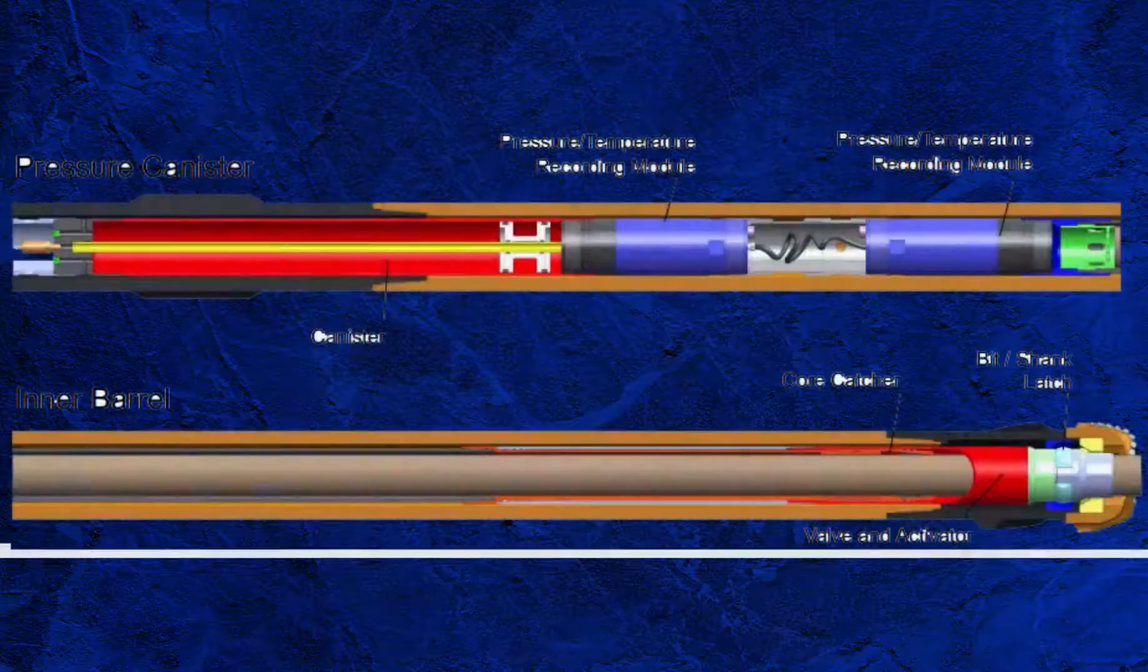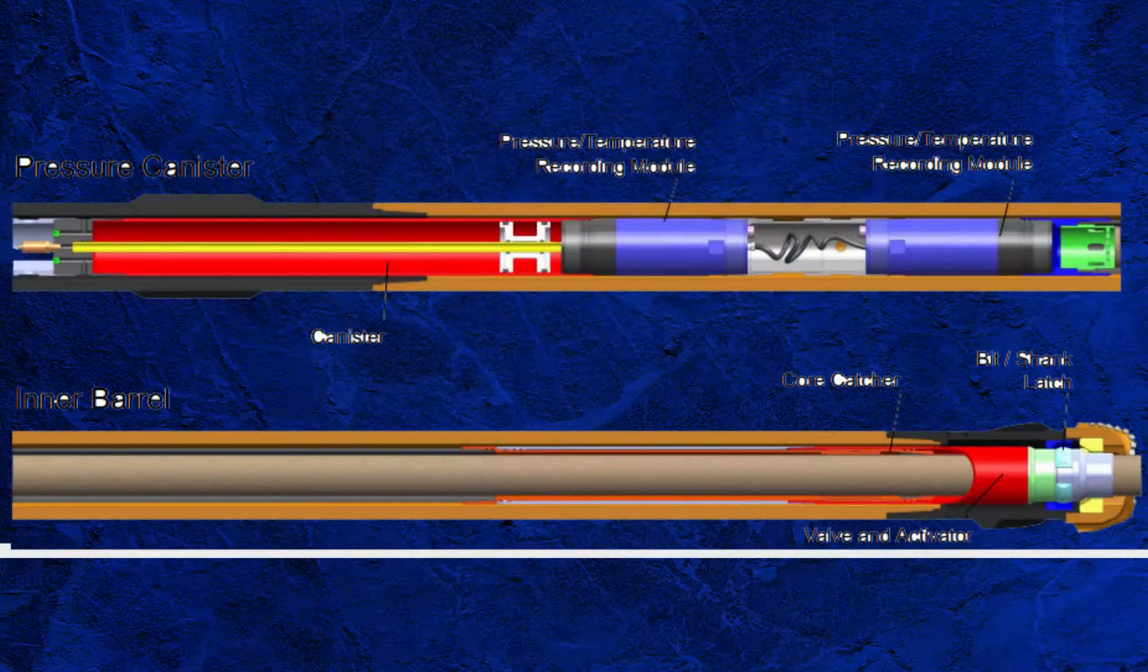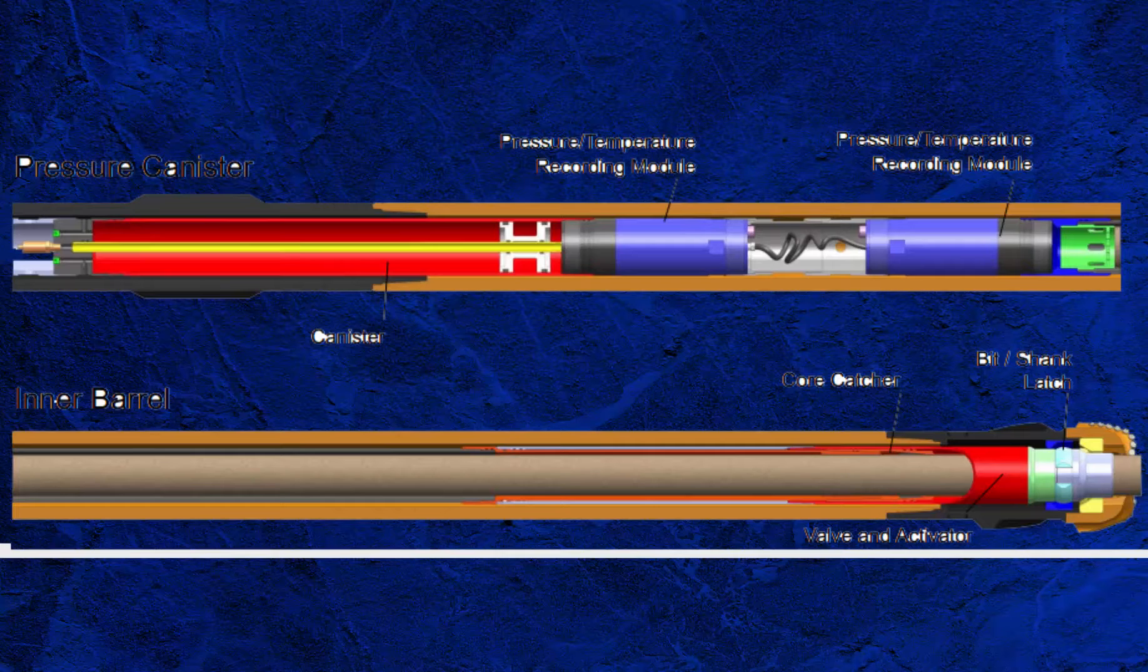The gas trapper system from ALS can be considered a variant of the pressure coring system. The gas trapper system is designed to collect the gas that escapes from the core during trip-out in a special chamber above the core barrel. At surface, the gas in the chamber is then bled off into special gas bottles and are sent away for analysis.